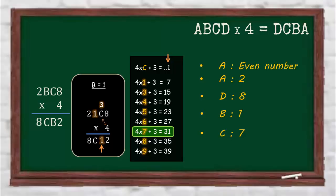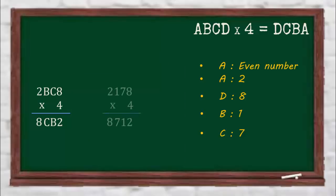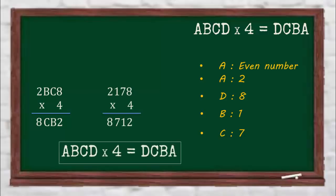Now we have all four values, and if you perform the multiplication, you will see that the equation is balanced.